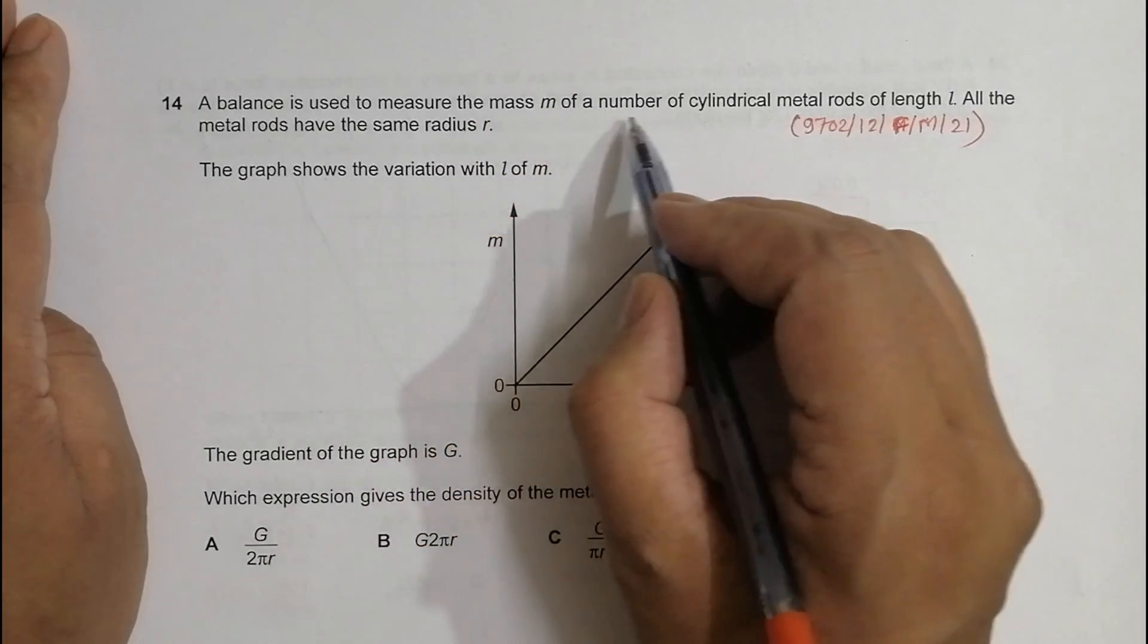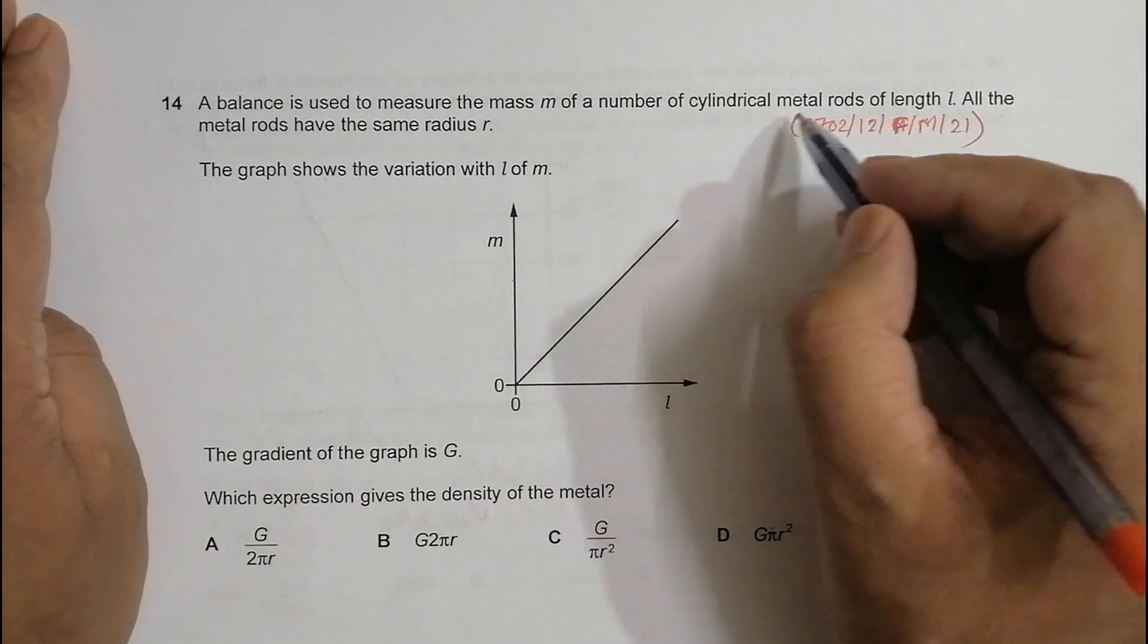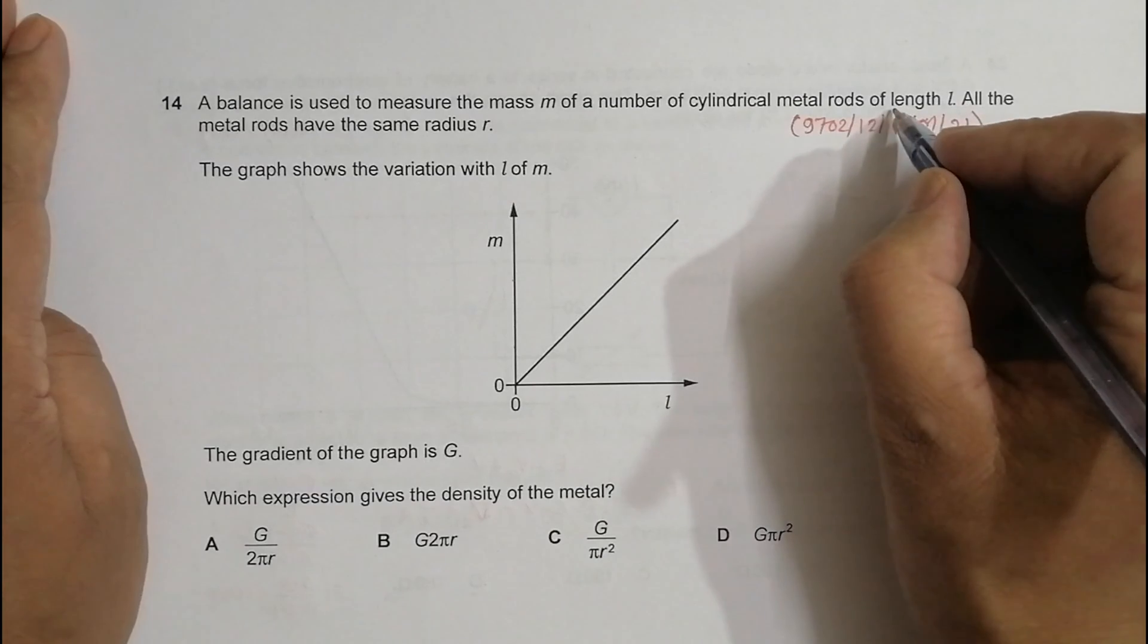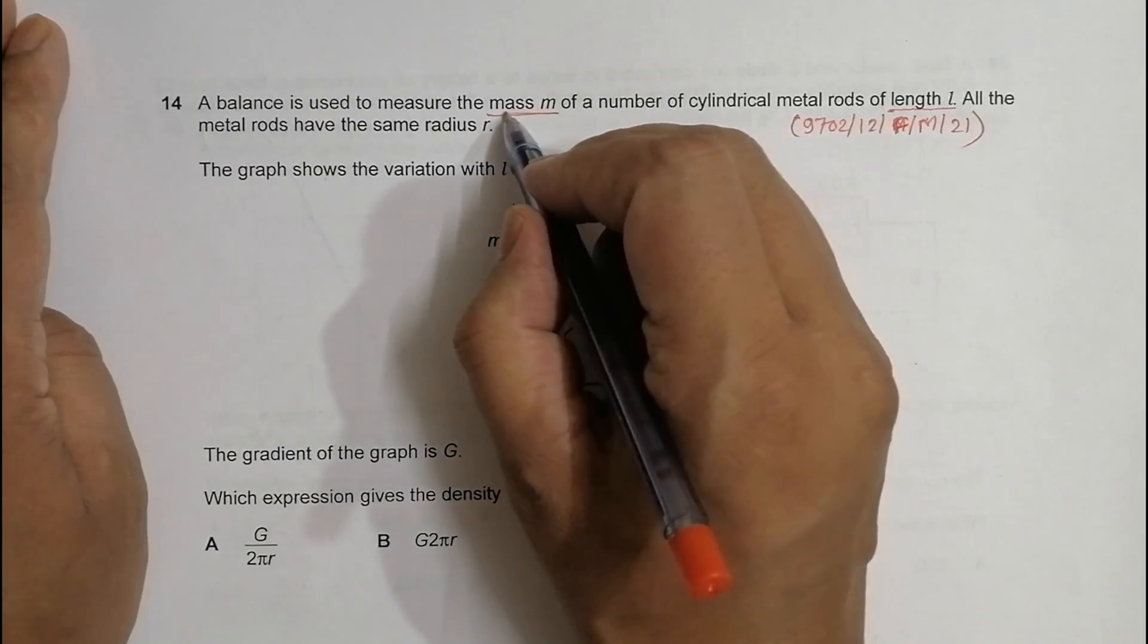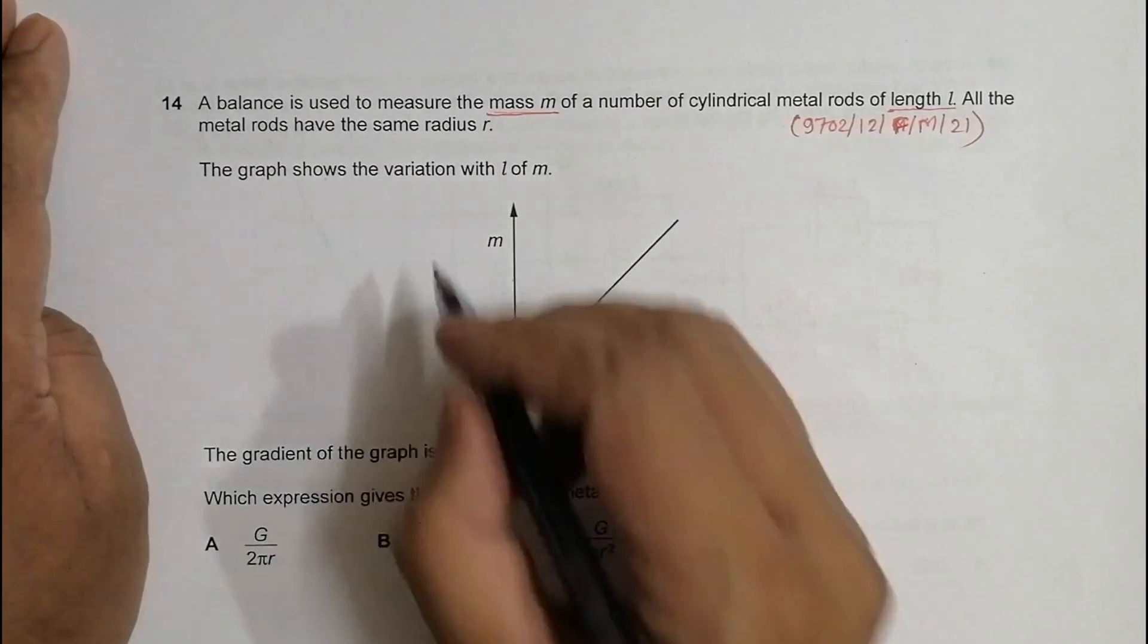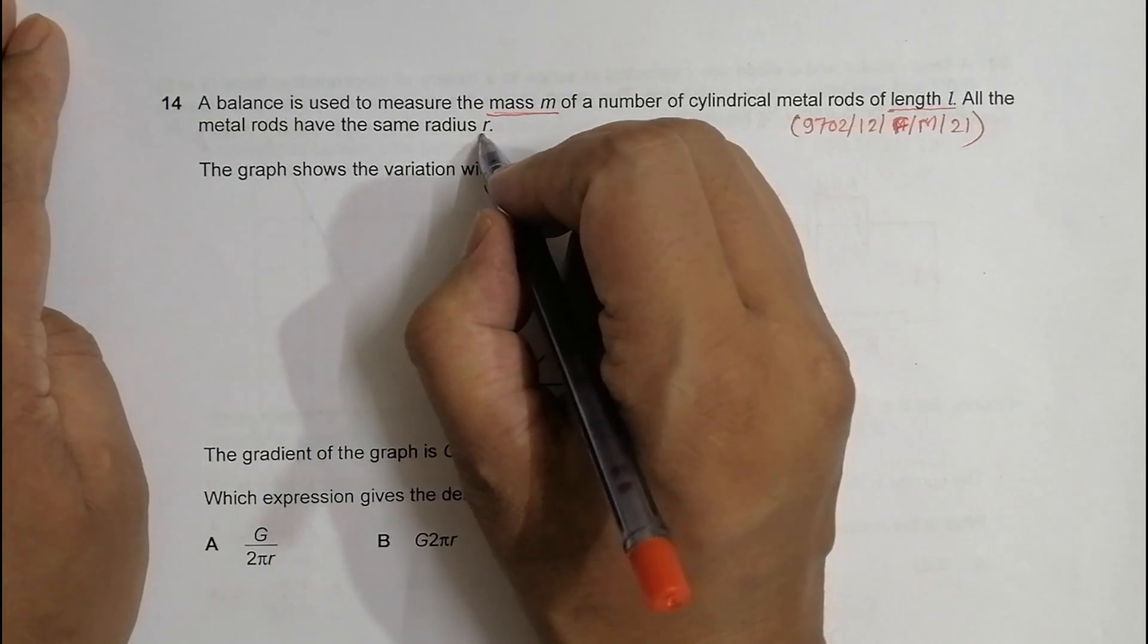The mass M of a number of cylindrical metal rods of length L. So we have to measure the mass M of those cylindrical metal rods whose length is L. The rods have the same radius R, so R should be constant.